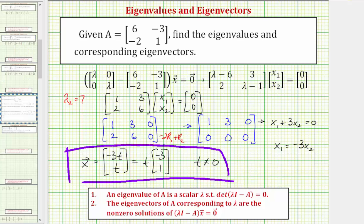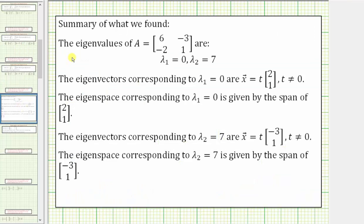To summarize: the eigenvalues of matrix A are lambda sub one equals zero and lambda sub two equals seven. The eigenvectors corresponding to lambda sub one equals zero are vectors x of the form t times [1, 2], where t doesn't equal zero, and the eigenspace is the span of that vector. The eigenvectors corresponding to lambda sub two equals seven are vectors x of the form t times [negative three, 1], where t doesn't equal zero, and the eigenspace is the span of that vector.